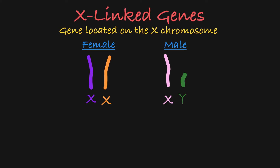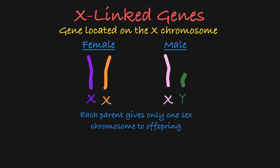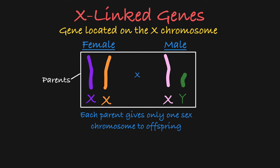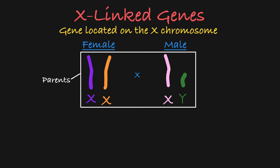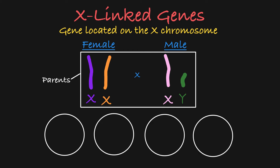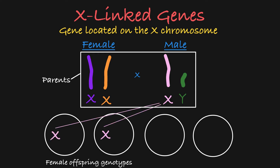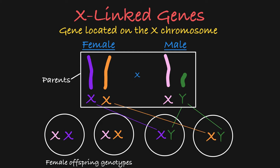The key to note here is that each parent gives just one of their sex chromosomes to their offspring. If these are two parents and they produce offspring, they have four different offspring combination options. To create female offspring, the male donates his X, and the female can donate either this X or this X. Or the male could donate his Y chromosome to be paired with either X from the female, giving the sex chromosome combinations for the male offspring.